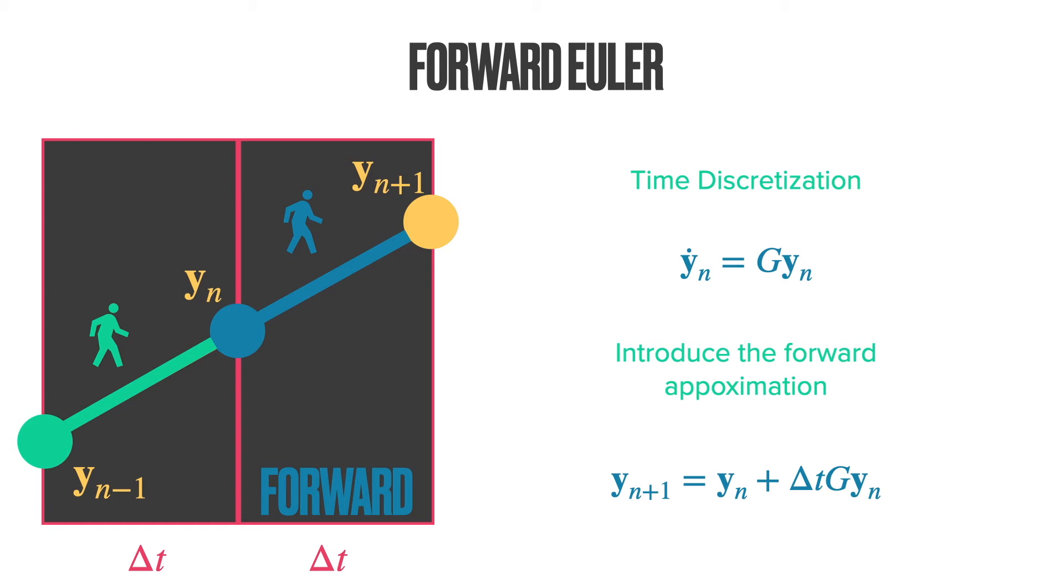Now, if we introduce the forward difference into the above first-order differential equation, we obtain the second equation, yn+1 is equal to yn plus delta t gyn. Thus, if you know your velocity or the displacement at yn, we can compute the new displacement, the new velocity at time yn+1. This is your first prediction.